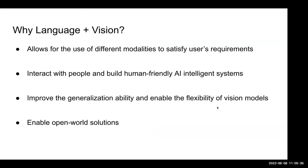Given this, we aim to learn with language models to build intelligent systems with improved generalization ability and flexibility. We briefly list several reasons why we need Vision plus Language: first, it allows use of different modalities to satisfy users' requirements; second, it interacts with people and builds human-friendly AI systems; third, it could help improve the generalization ability and enable flexibility of vision models; and last, it could enable open-world solutions.